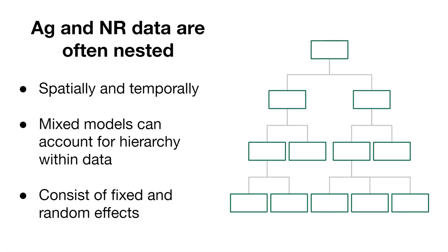Now the importance of agriculture and natural resources data, one of the characteristics of them, is that the data are often nested. So these data can be nested spatially. That is, they could be arranged in a spatial pattern that makes them nested within other units. Or they could be nested temporally. And so we might visit the same things year after year, or we might measure something throughout the experiment and throughout a study, and we might think that they're nested in that way. The valuable thing about mixed models is that they can account for the hierarchy within data. This is important, and it gets back to that fact that the data might be nested. Mixed models also consist of fixed and random effects, which we'll talk more about when we talk about how to set up mixed models.